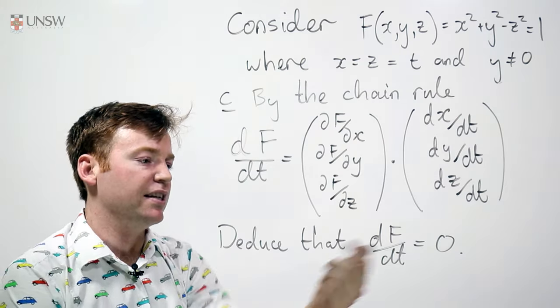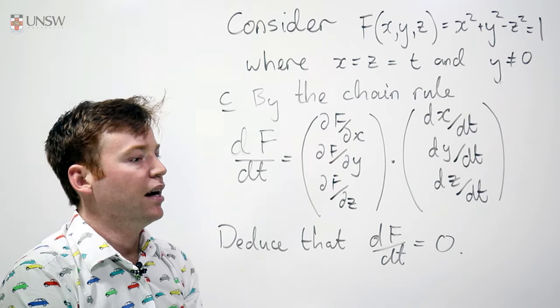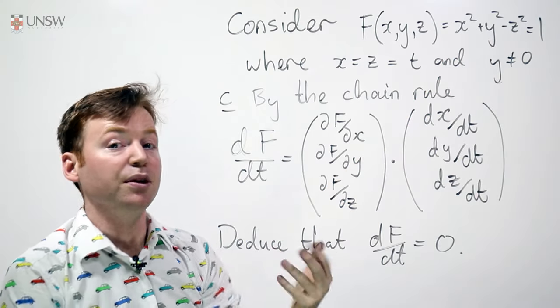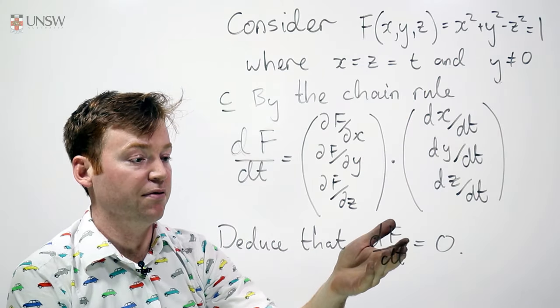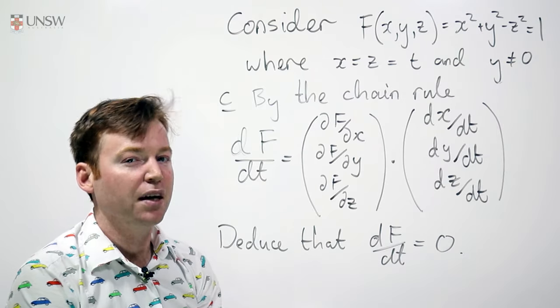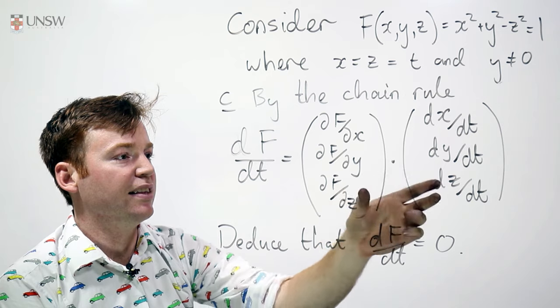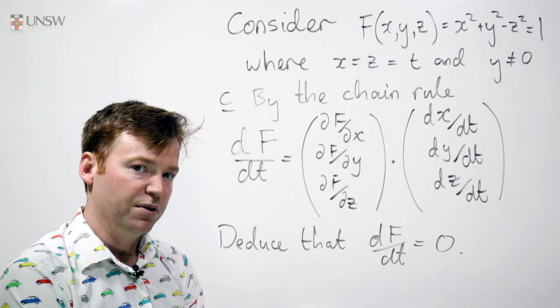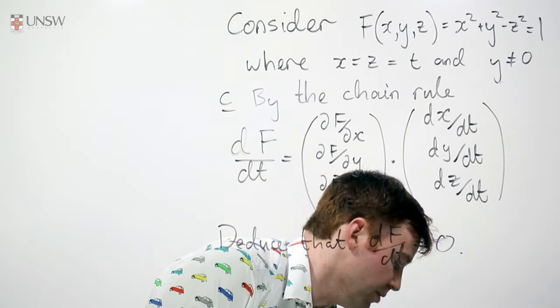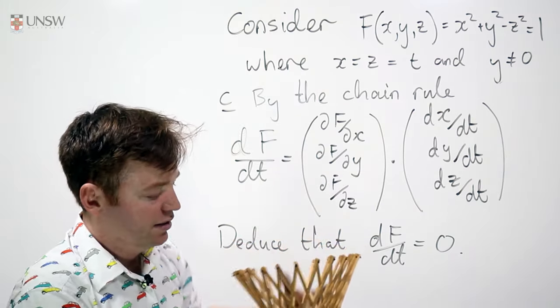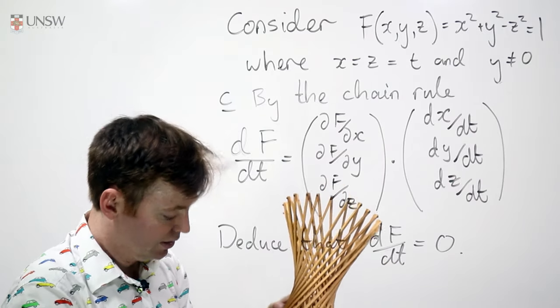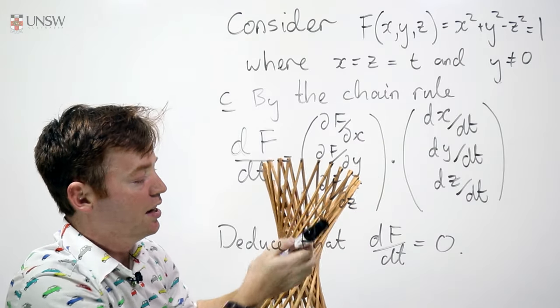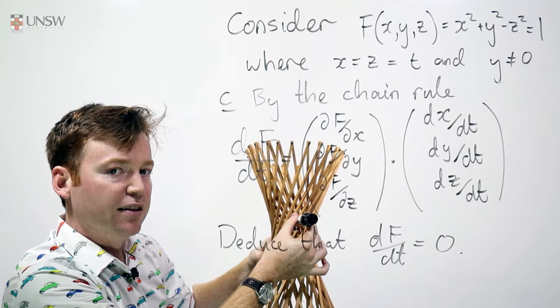First of all we need to deduce that df/dt is equal to zero. That's easy because f is equal to, yes it's equal to this jumble of numbers but it's also equal to one. So df/dt is d constant/dt which must be zero. But geometrically it means something very special. It means that the dot product of these two vectors is equal to zero which means the two vectors are perpendicular. So as we traverse the hyperboloid we're moving along this line and the direction vector, this one here, points along the line and the normal is perpendicular to that line.